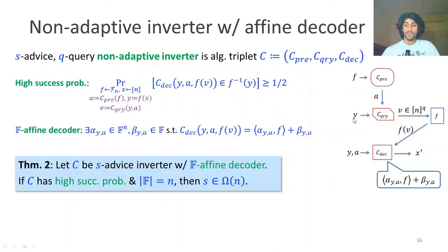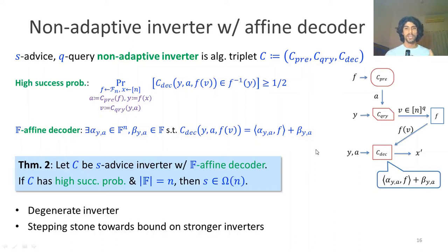Our result for this kind of decoder is that, regardless of how many queries it uses, and given that the size of the field must equal n, then the advice used by the algorithm must be at least order of n, which again basically closes the gap with the trivial upper bound. This is a quite degenerate inverter - it can't do much - but it's interesting because it allows us to modify it and yield bounds which are more interesting for more complex decoders.